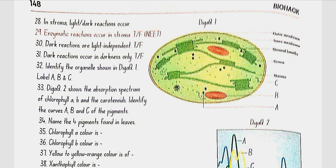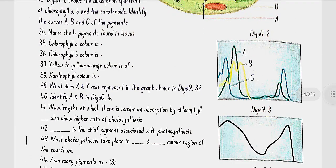Identifying the organelle in diagram 1: this is a chloroplast. Label A is the lipid droplet, B is the starch granule, and C is the ribosome. Diagram 2 shows the absorption spectrum of chlorophyll A, B, and carotenoids. Curve A is chlorophyll B, B is carotenoids, and C is chlorophyll A.